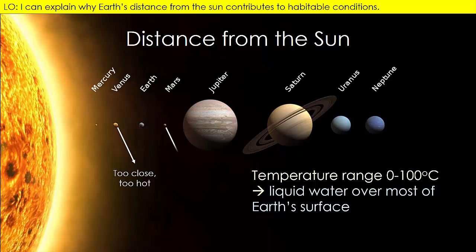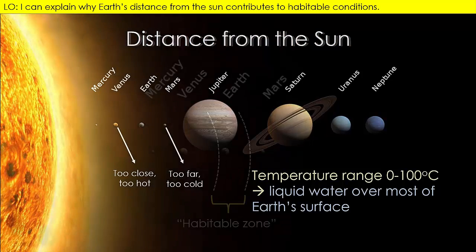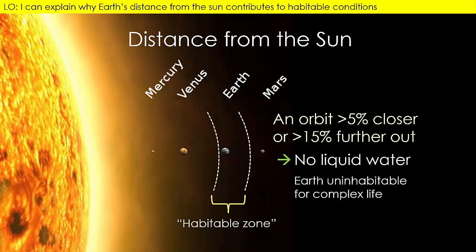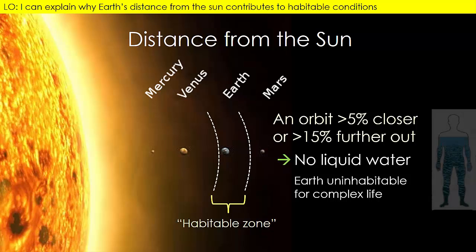Toasty Venus is closer to the Sun and its original water has evaporated. In contrast, any water that remains on cold Mars is present only as ice. If Earth had been located just a little closer to the Sun or a little further away, just a few percent either way would mean no water. Most organisms need water for their basic cellular processes, and the first life on Earth lived in the oceans. And the average adult is about 60% water.